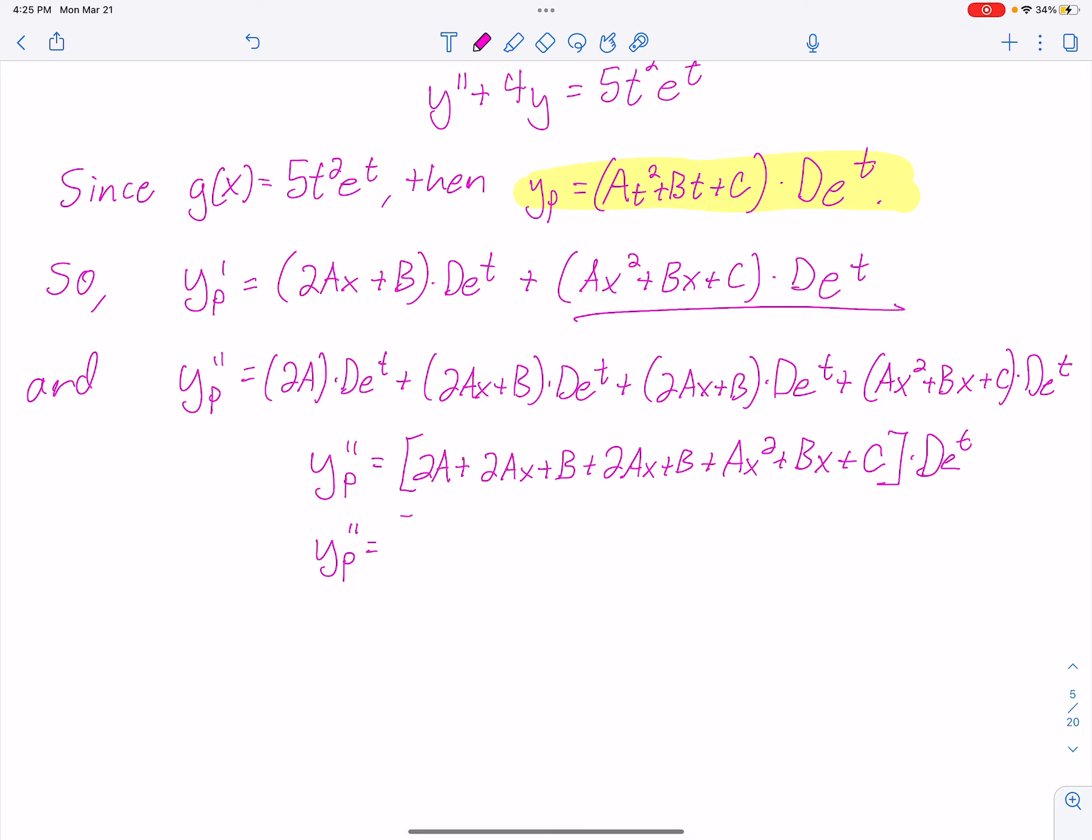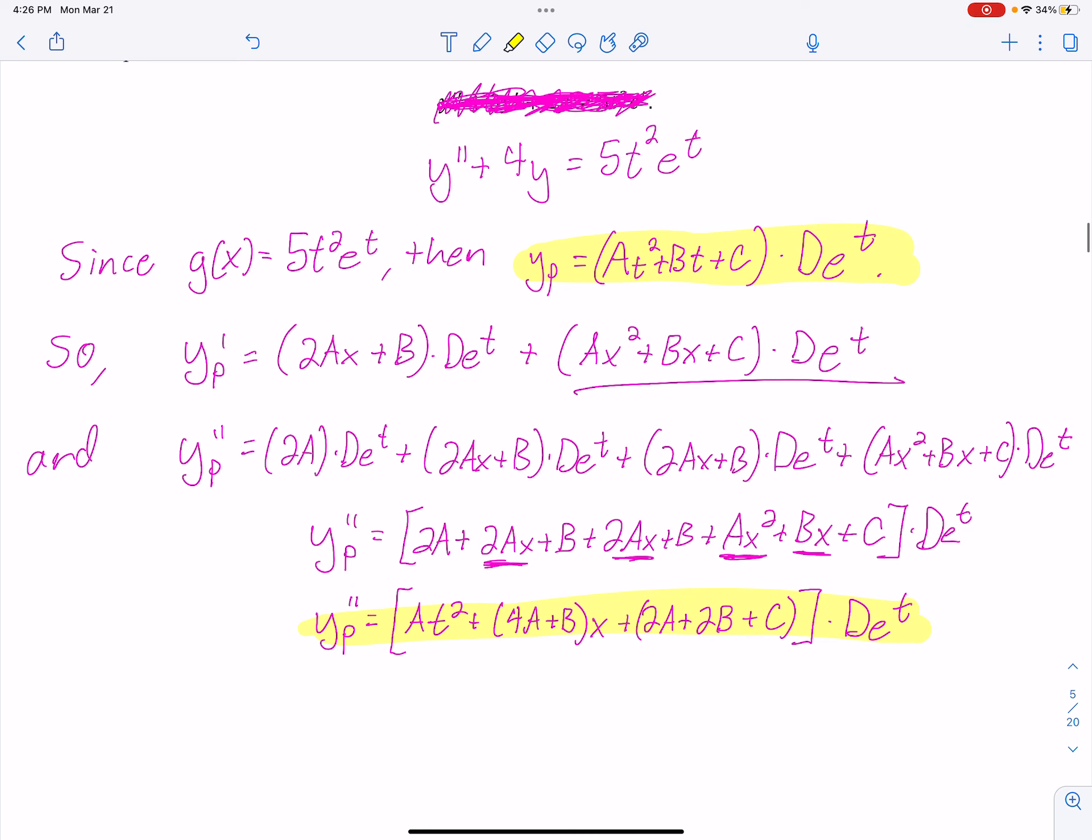I'm going to go ahead and combine like terms as well. So I'm going to put the At² up front, that's this term. And then now I'm looking for anything with t's. So I got 4A + B times t. The rest are constants. So I got 2A + 2B + C. I can put the constants together as well, times De^t. Now I have these two expressions cleaned up decent, and I know if I follow the DE, I can figure out what A, B, and C are.